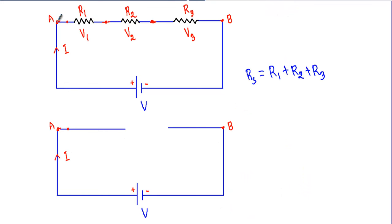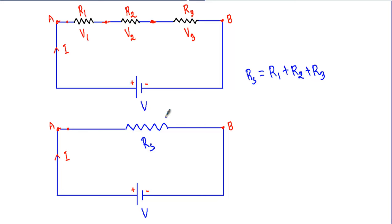The total or equivalent resistance between terminals A and B is RS. This means I can replace the three resistors with a single resistor whose value equals RS — this is called the equivalent resistance. So I have replaced the three resistances with a single resistance RS, where RS equals R1 plus R2 plus R3. This implies that when a number of resistances are connected in series, the total or equivalent resistance is the sum of the individual resistances.